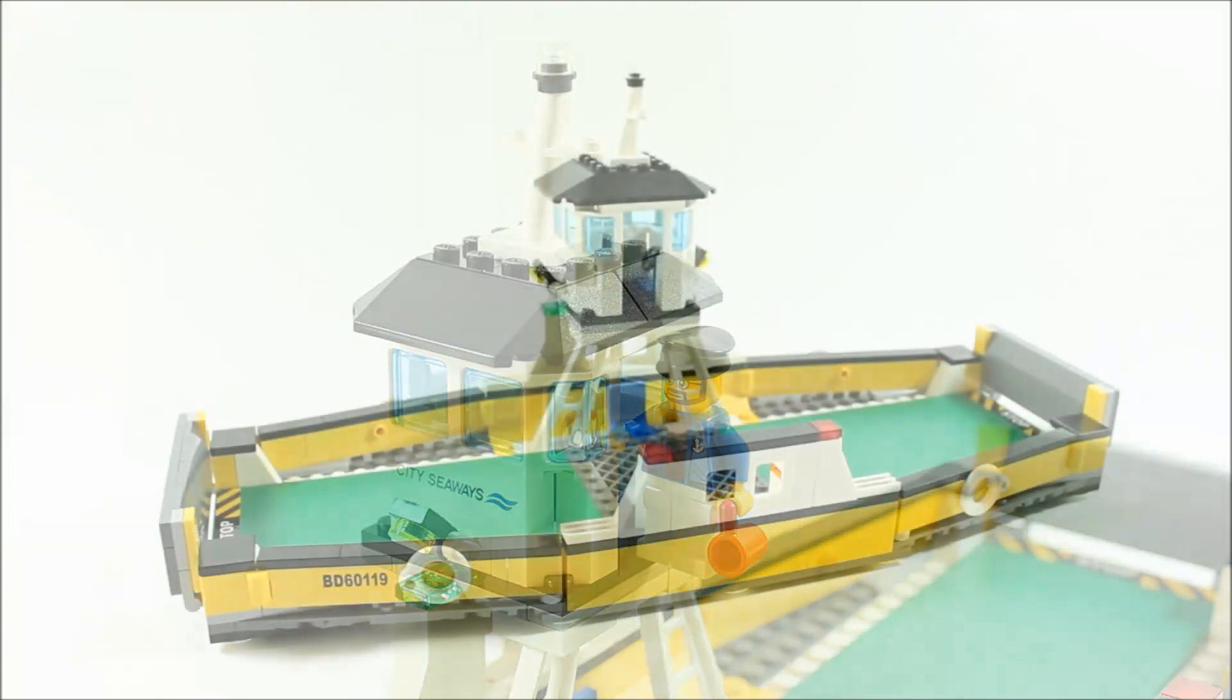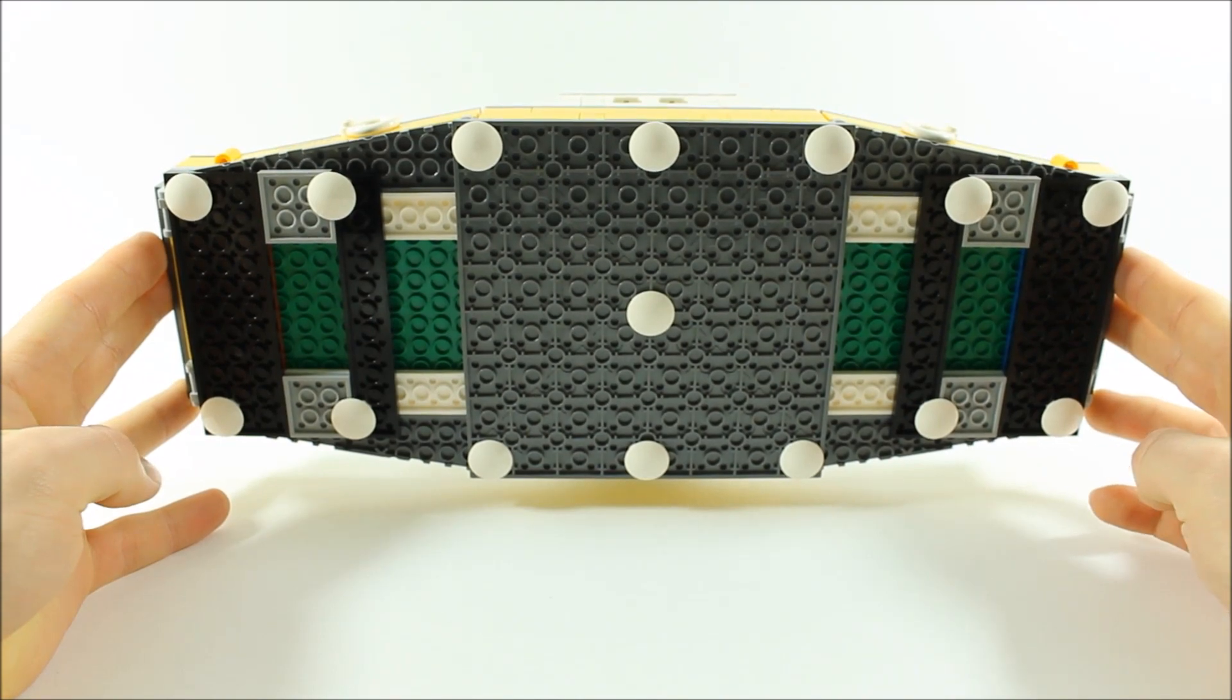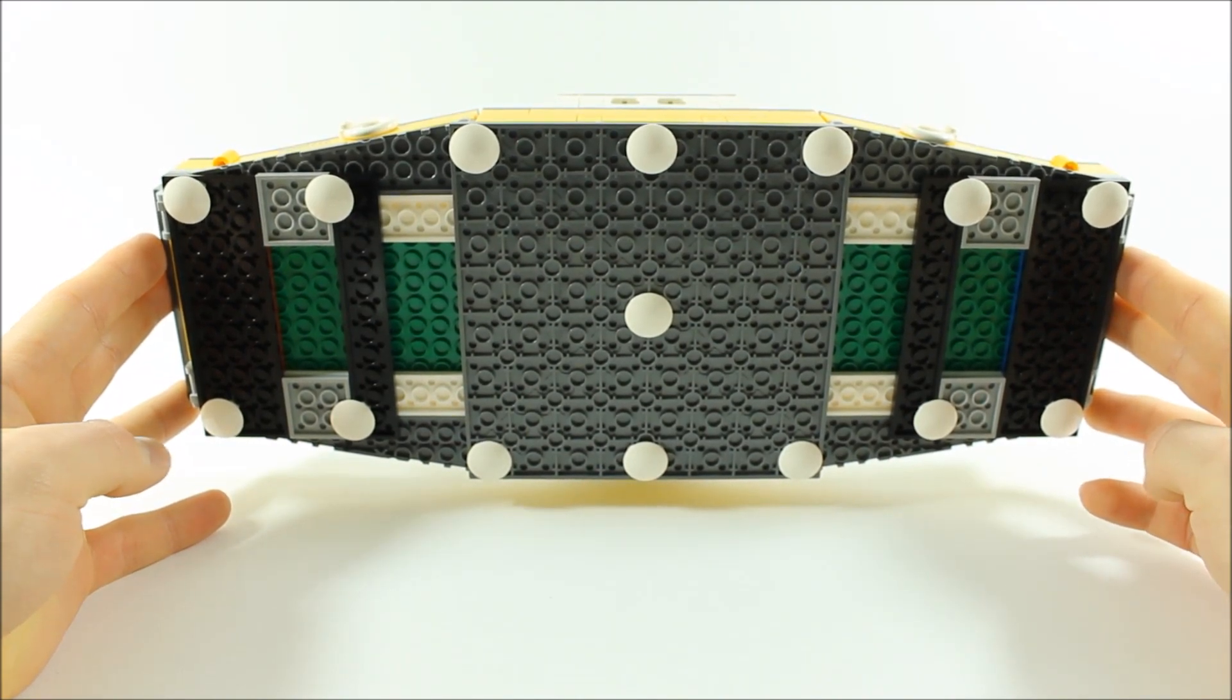Underneath the ferry you can see the plate build, but there are 15 white slider plates to easily help it move around, which is great for play.